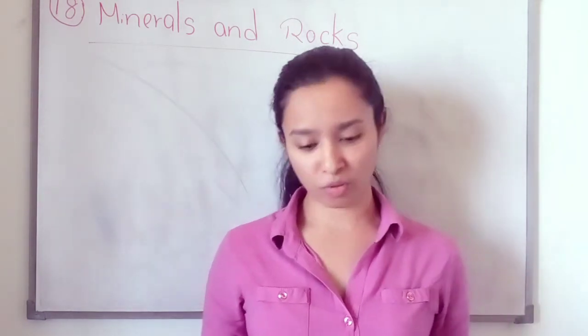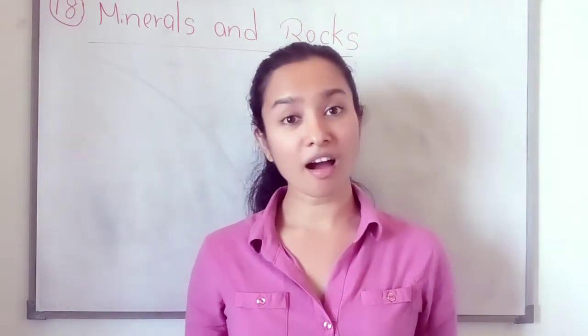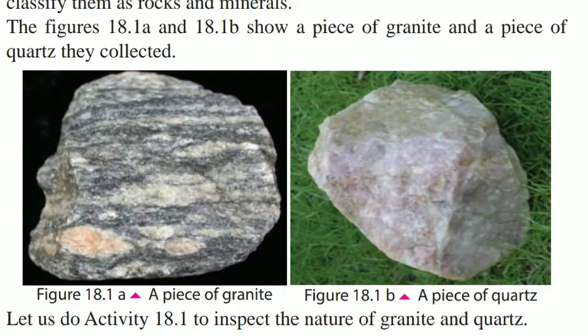Look at your book. Turn to page number 100. There are two types of stones: one is a piece of granite and the other one is a piece of quartz. Granite is a type of rock and quartz is a type of mineral.